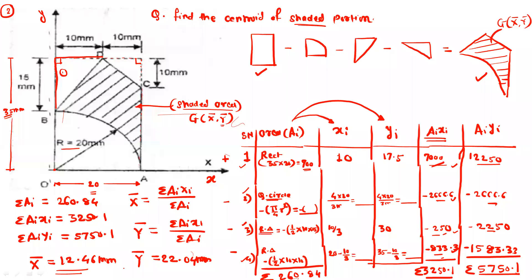So if you want to locate x-bar and y-bar — that is the centroid of the shaded area — this is 20 mm, and the x-bar value is 12.46. This is 10 mm, and y-bar is 22. Total distance is 35, so half will be 17.5 somewhere here. So 22 — this is the location of the center of gravity G. The x coordinate is 12.46 and y coordinate is 22.04. This is how we can find out the centroid for the composite area.